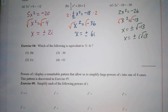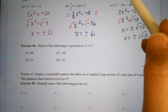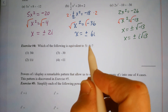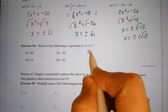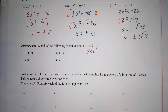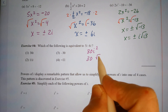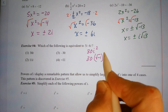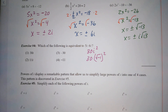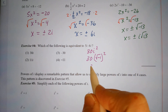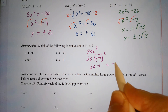Number four: which of the following is equivalent to 5i times 6i? Similar to 5x times 6x equaling 30x squared, here 5i times 6i equals 30i squared. Since i equals the square root of negative one, i squared equals the square root of negative one, squared. Squaring a square root removes the radical, so it becomes 30 times negative one, which equals negative 30.